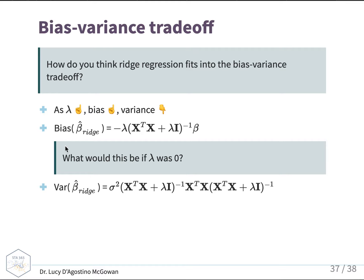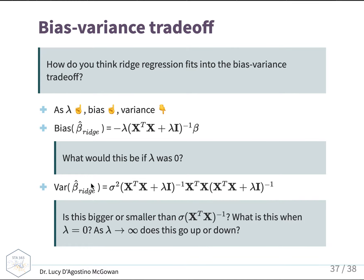Coming back to our bias question: if lambda is zero, the bias is going to be zero. And if lambda is zero, as we remember from the original ridge regression equation, we're just estimating β̂ like we would with least squares, which we know is an unbiased estimator. Looking at the variance and comparing to what we know the variance of normal β̂ is — σ² times X'X — if lambda is zero, this would become σ² times X'X inverse times X'X times X'X inverse. When you multiply anything by its own inverse, it cancels out to the identity matrix. So when lambda is zero, we get back to the variance of our normal β̂, which is what we'd expect.